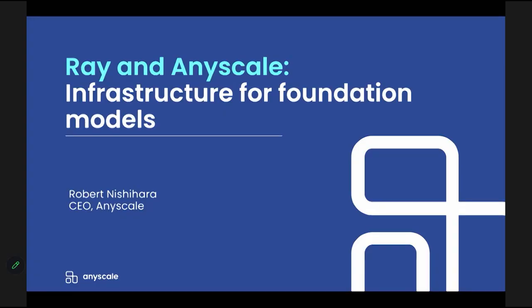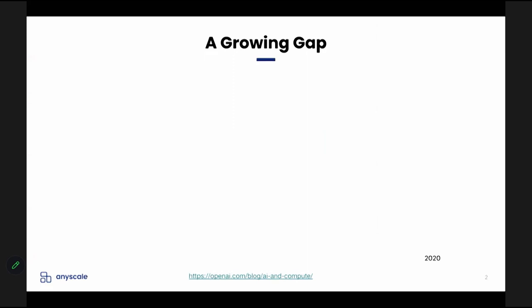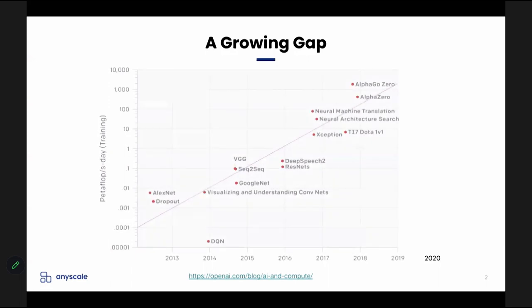I'll say a little bit about how companies are using Ray and AnyScale for foundation models. The first thing I want to mention is just why we're doing this in the first place. The underlying trend — and this is a plot from OpenAI — is that the amount of compute needed to do machine learning has been exploding. It's been growing at something like 35 times every 18 months, which is absolutely enormous. Other people have written papers measuring this trend and you get different numbers, but no matter how you slice and dice it, it's an astronomical rate.